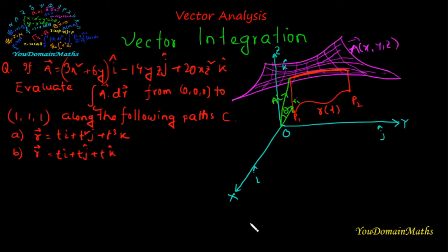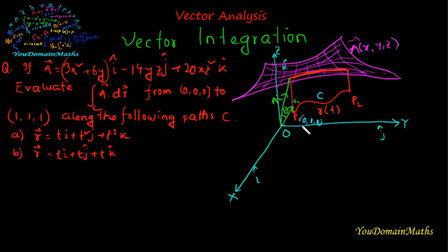Hello viewers, we will see an example of line integral in vector integration. If A equals (2x² + 6y)i + (20xz²)j, where i, j, k are the unit vectors along x, y, and z respectively. We need to evaluate the line integral A·dr from (0,0,0) to (1,1,1) along path C, which is defined by r = ti + t²j + t³k.